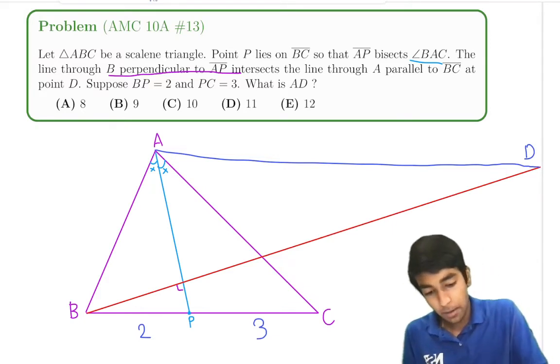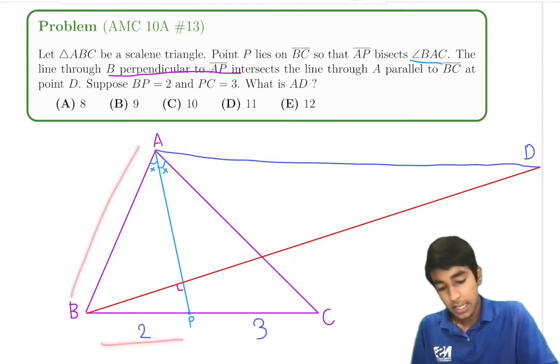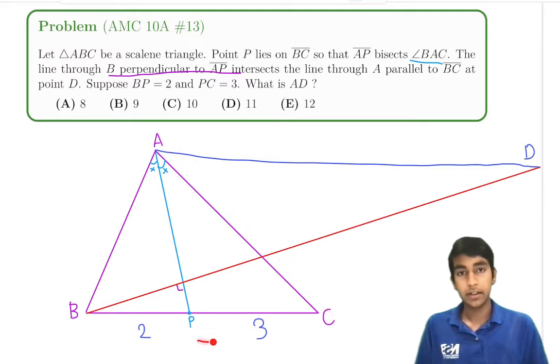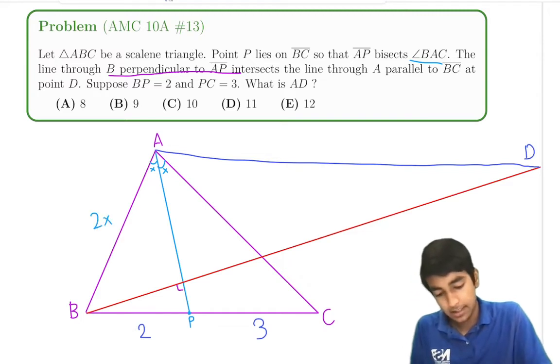So by angle bisector theorem, we have that AB over 2, which is BP, equals AC over 3. So then we can let's just say that AB is 2X and AC is 3X.